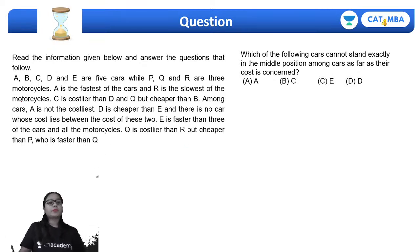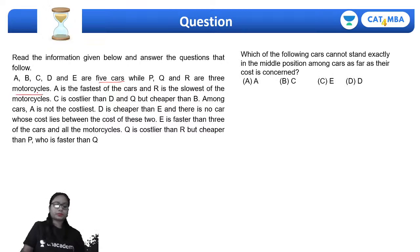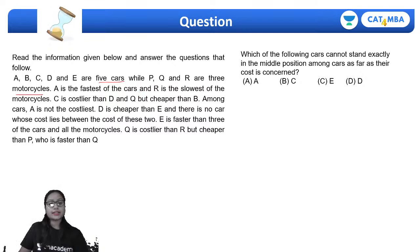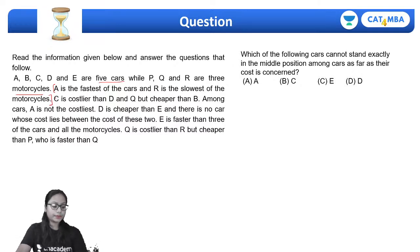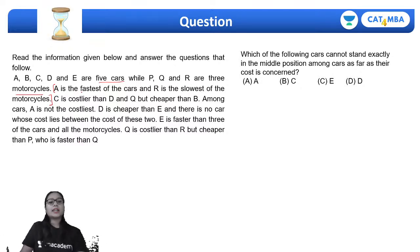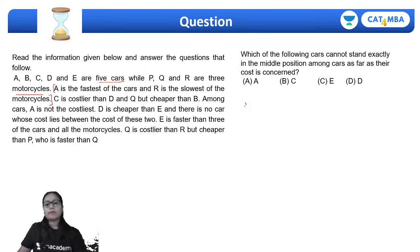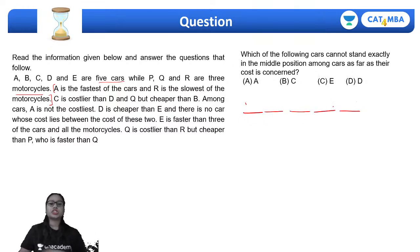The question states that A, B, C, D, E are 5 cars, and P, Q, R are 3 motorcycles. A is the fastest of the cars and R is the slowest of the motorcycles. I will make 5 positions for the cars — fastest on one end, slowest on the other — and place A at the fastest position. For the 3 motorcycles I make 3 positions and place R at the slowest position.